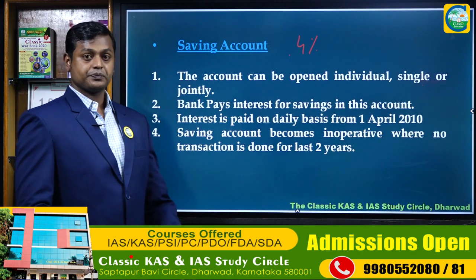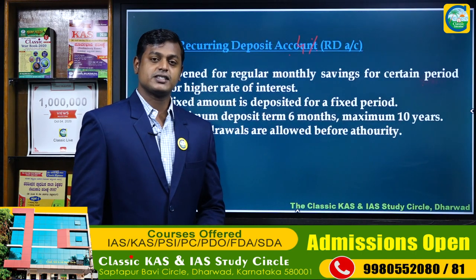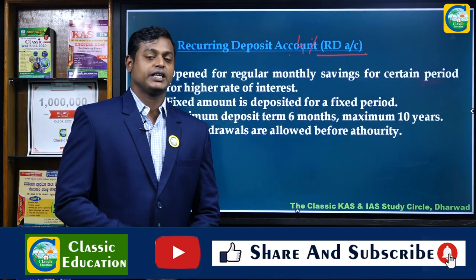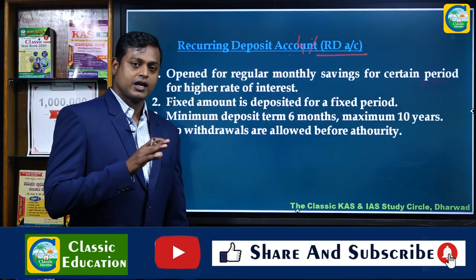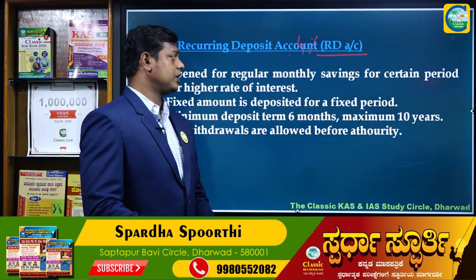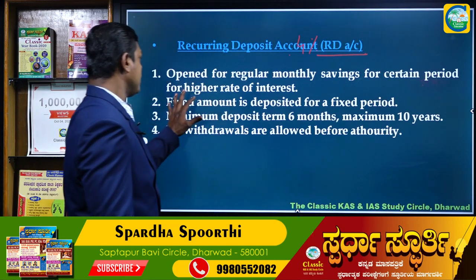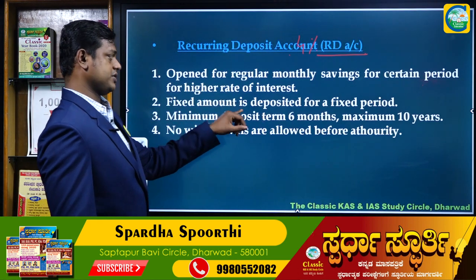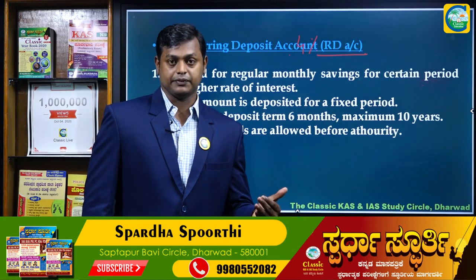Now let's move to point number three: Recurring Deposit Account, also called RD Account. A recurring deposit account is a type of account where anyone can open — business persons, employees, or anyone. Point number one: it is opened for regular monthly savings for a certain period to get a higher rate of interest. Point number two: a fixed amount is deposited for a fixed period.